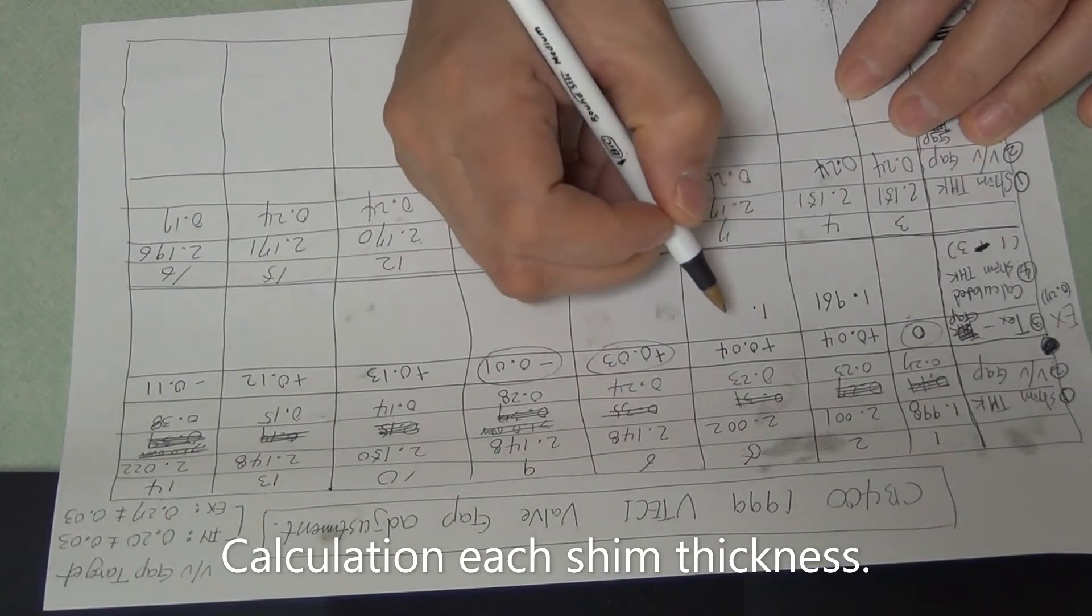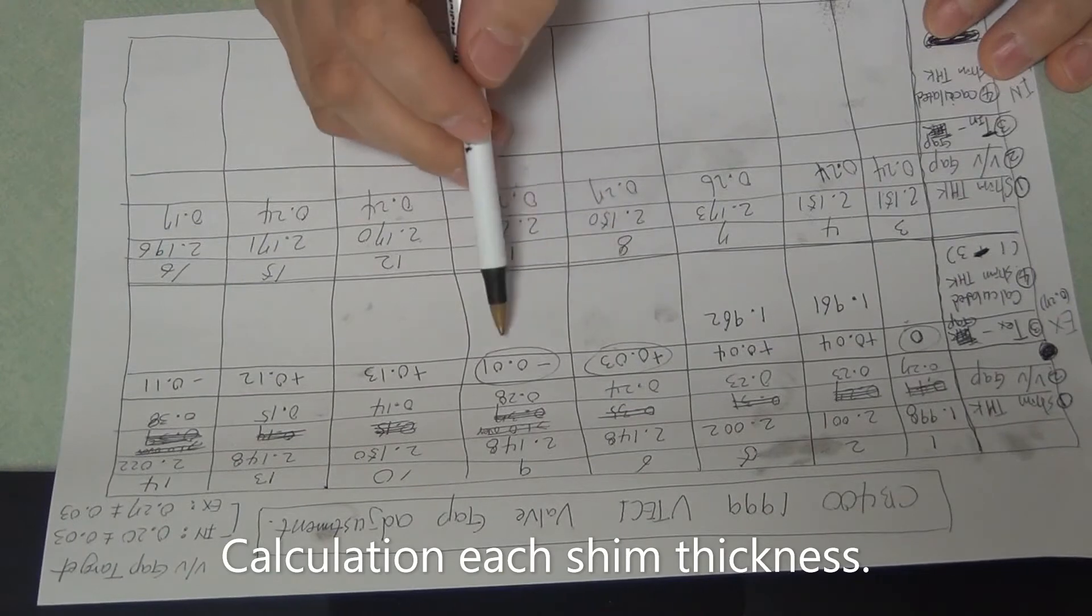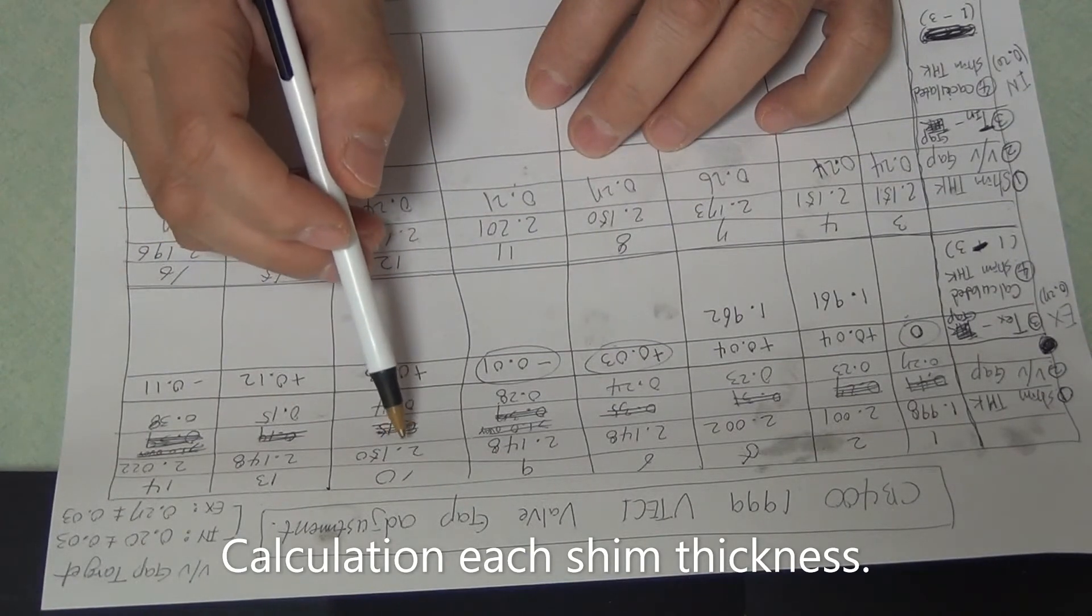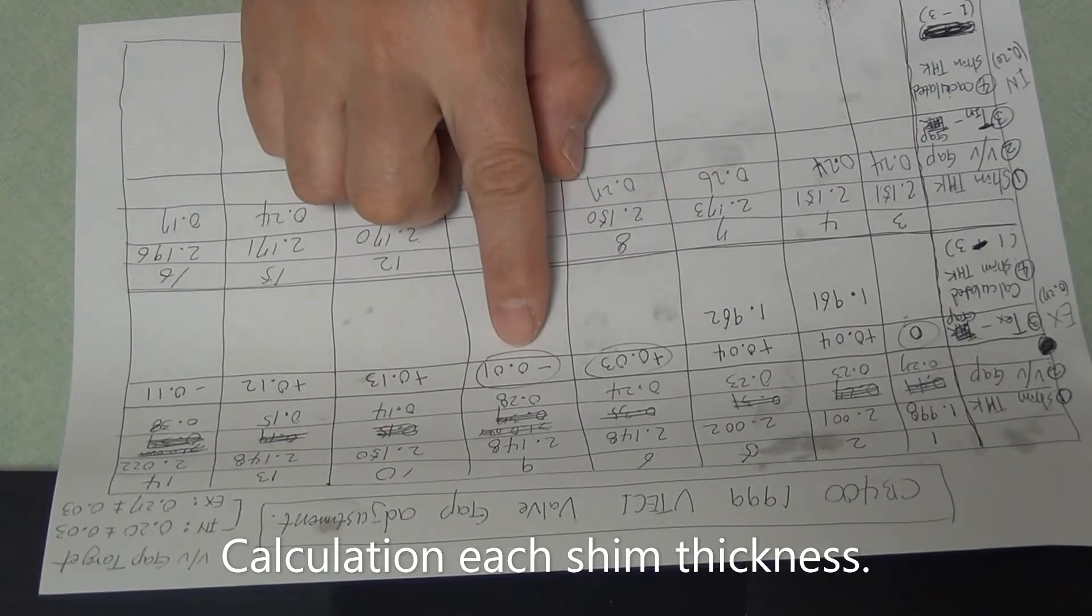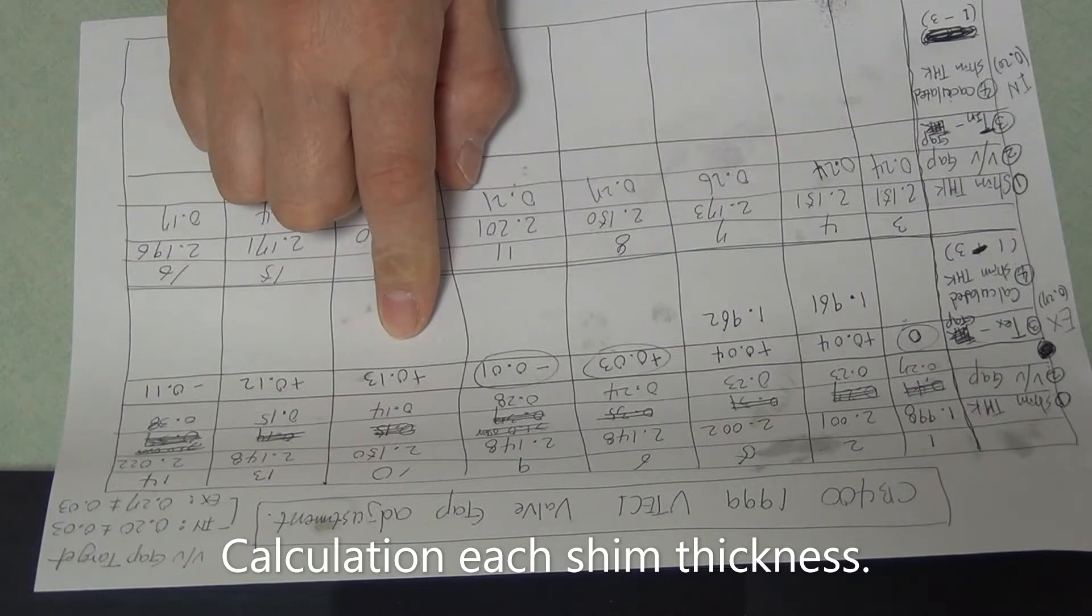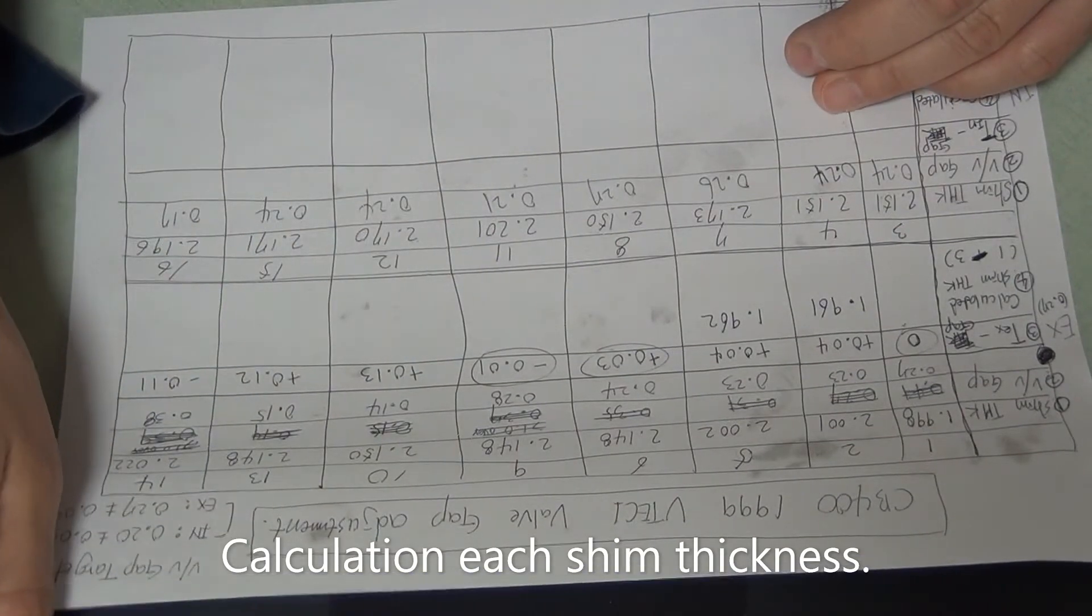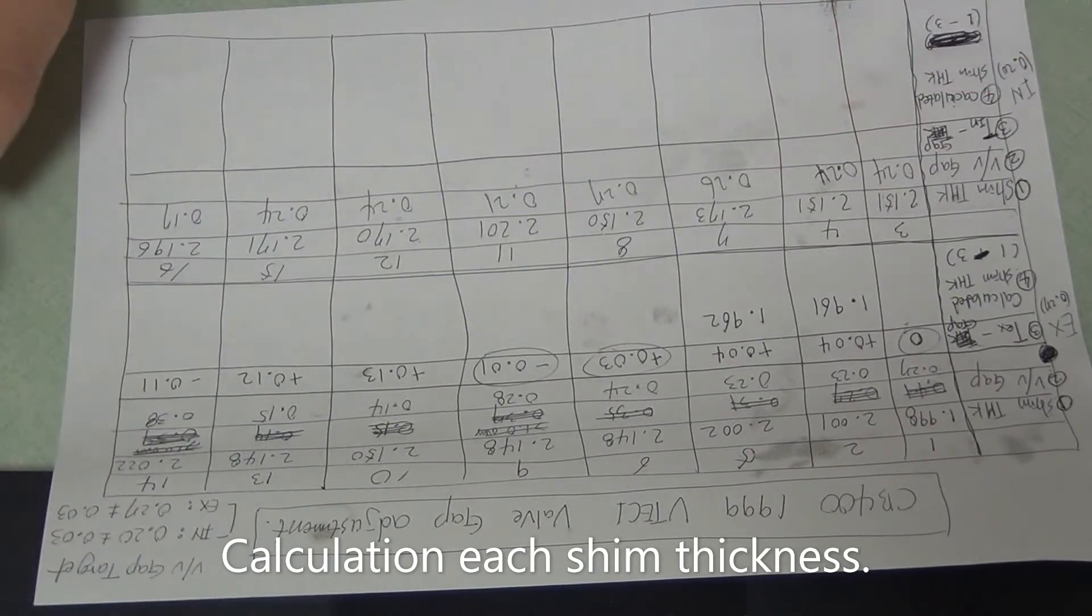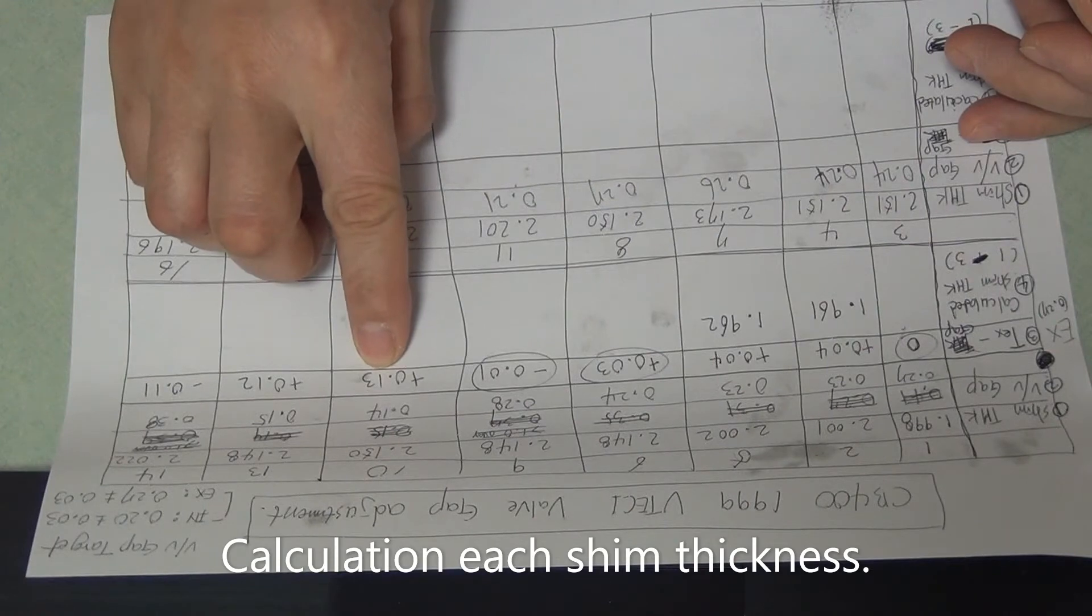One point nine six two, and no need to change. Number ten, the measured shim thickness is two point one five zero, two point one five zero, minus 0.13, 0.13. 0.27 minus 0.13, 0.13.